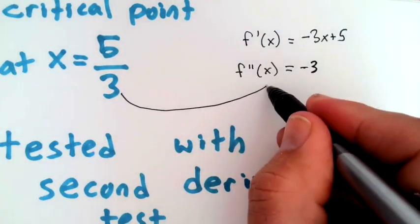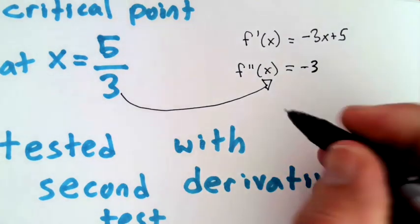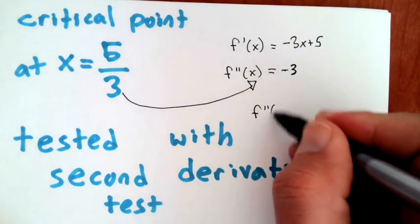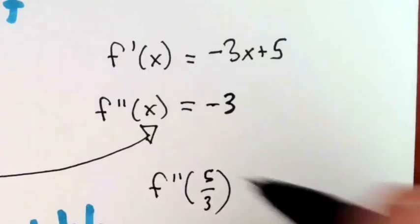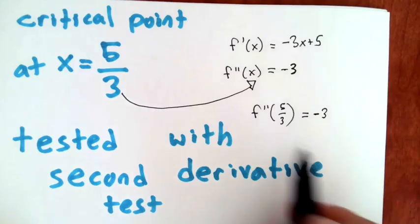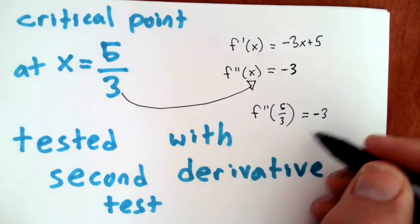If I plug x = 5/3 into the second derivative, I get f''(5/3). This is a constant function, so I get -3. The second derivative is negative.